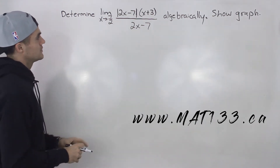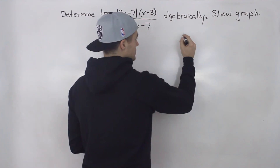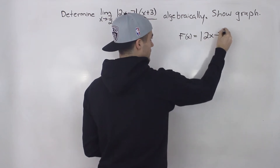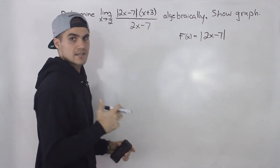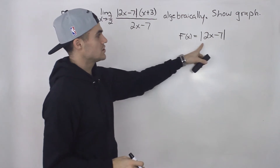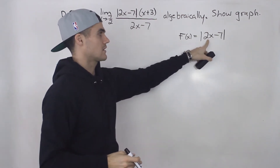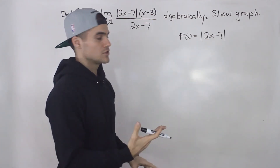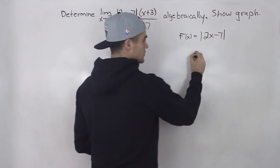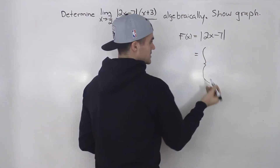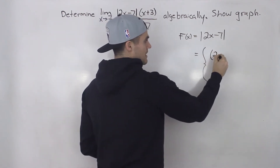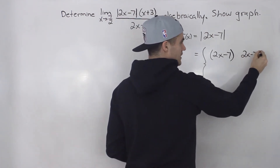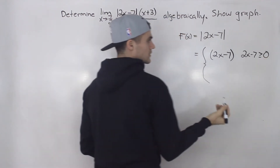The first thing you want to do is deal with this absolute value function. Let's rewrite the absolute value of 2x minus 7. The absolute value changes everything to a positive. So if 2x minus 7 is already positive, we just leave it as is. We can rewrite this as a piecewise function: 2x minus 7 when 2x minus 7 is greater than or equal to 0.